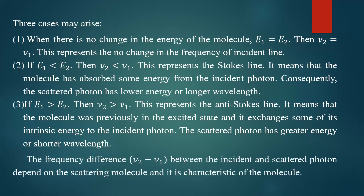The frequency difference nu2 - nu1 between the incident and scattered photon depends on the scattering molecule only, and this difference represents the characteristic property of the molecule. This change in frequency is fixed whatever the incident radiation may be. That is why the Raman spectrum is a fingerprint of a substance — the difference nu2 - nu1 is observed for a particular substance only.